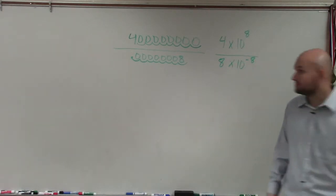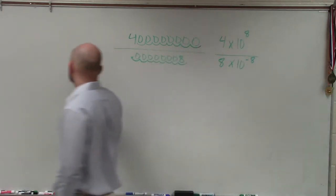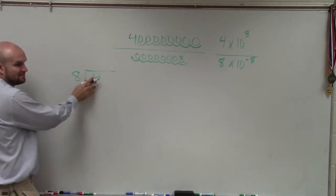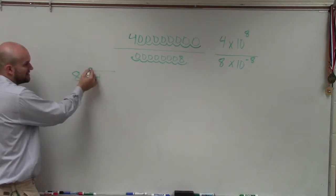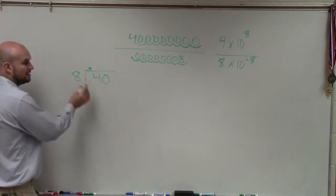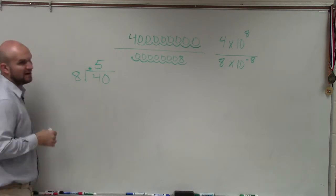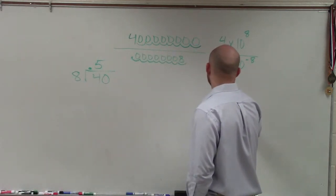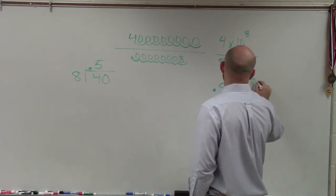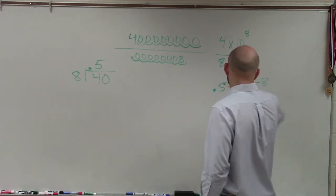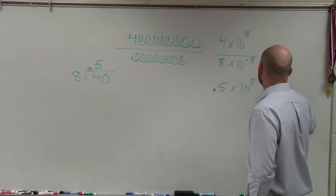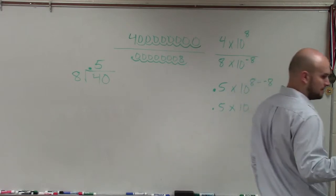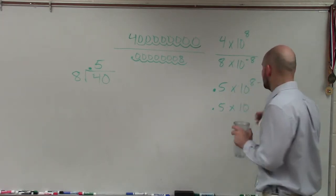Then I need to divide these. So 8 divides into 4. Just like we have talked about, 8 does not divide into 4. So I'm going to create a decimal point and use 0. 8 does divide into 40, though, 5 times. So when I do 4 divided by 8, I get 0.5 times 10 to the 8 minus negative 8. So I have 0.5 times 10 to the 16th power.